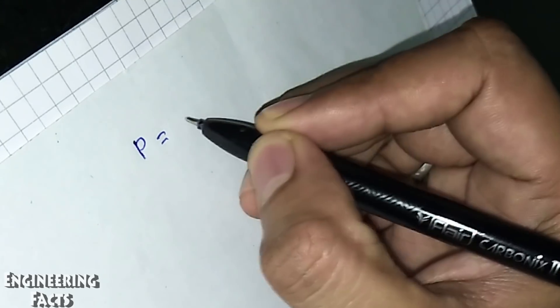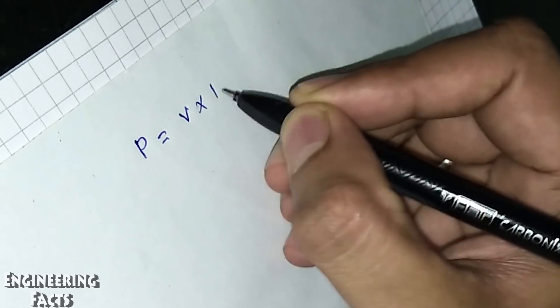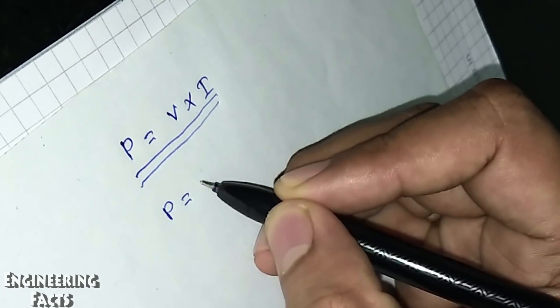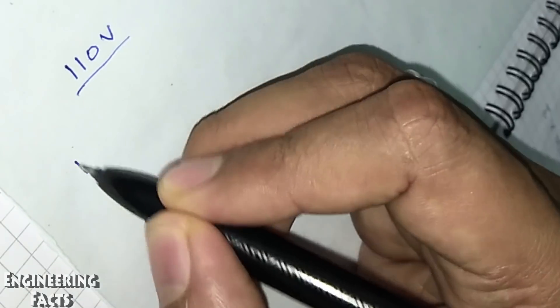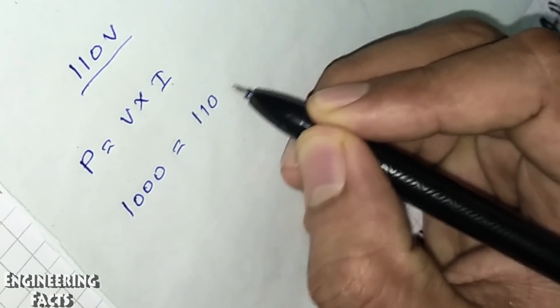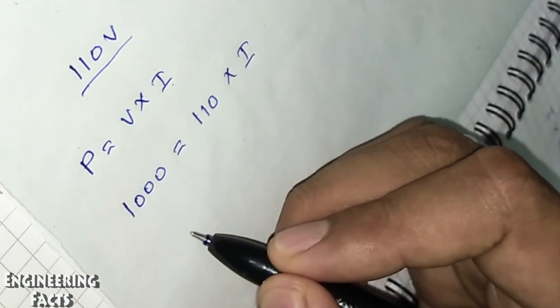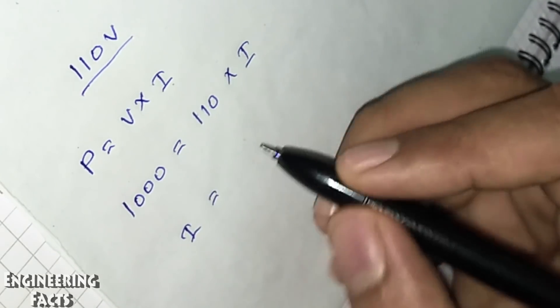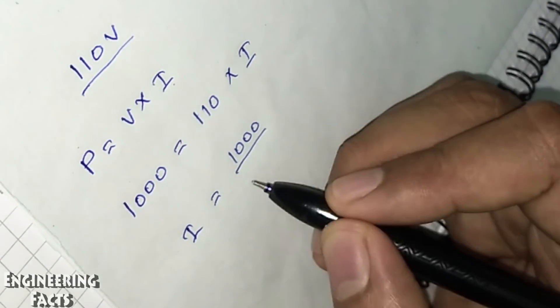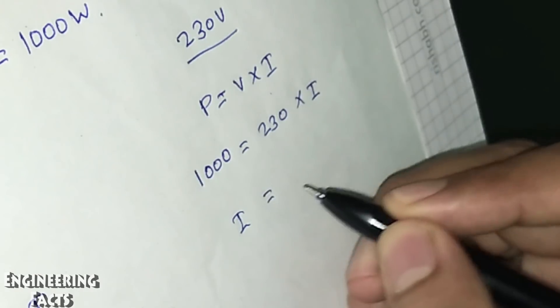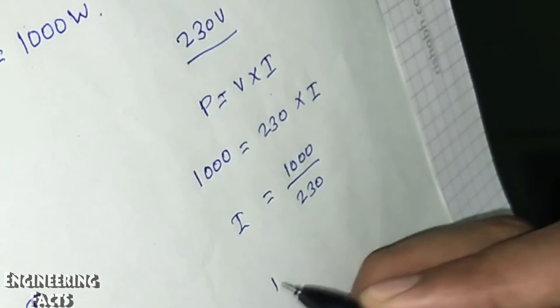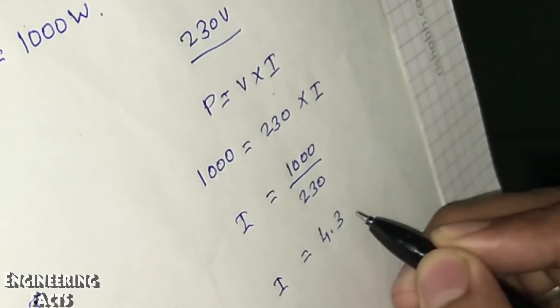The power formula is P equals V multiplied by I — that is, voltage multiplied by current. Consider an appliance rated at 1000 watts. At 110 volt, the current required is approximately 9 amperes. At 230 volt, the current required is approximately 4.3 amperes. So higher voltage means lower current for the same power.